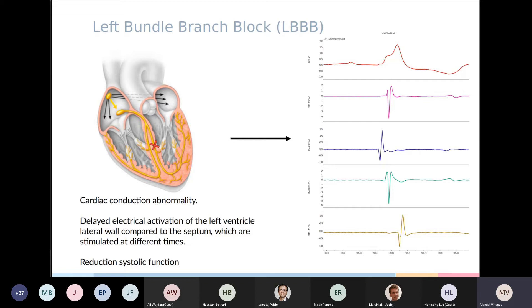In this case, the electrical stimuli cannot propagate through the left branch, so it will have a slower propagation, causing a delayed activation of the left ventricle lateral compared to the septum. This causes a reduction in systolic function and will also induce multiple changes to the organ in patients.